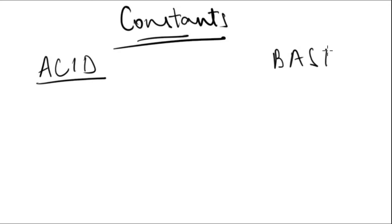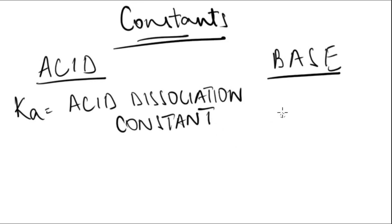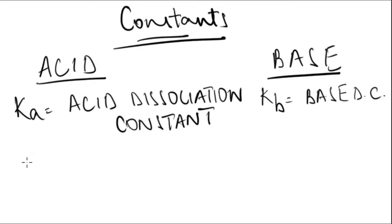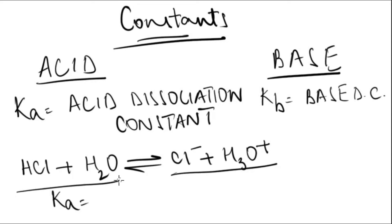You have two types of constants: one for acids, one for bases. It's known as K — Ka for acid, Kb for base — and it's known as the acid or base dissociation constant. The formula depends on the reaction. For example, you have an acid and you ionize it, so the equation will be Ka equal to the products divided by the reactants.